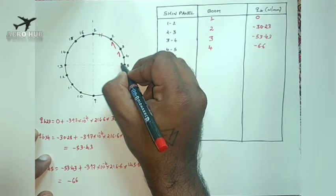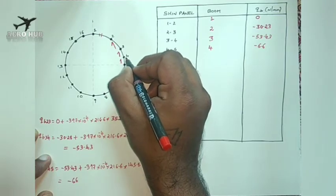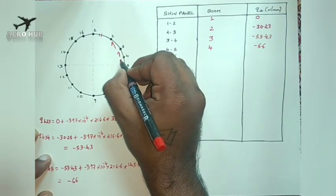This is in anti-clockwise direction because we are considering the flow from 4 to 5, but the value is negative, so the shear flow is reversed — it will be from 5 to 4.